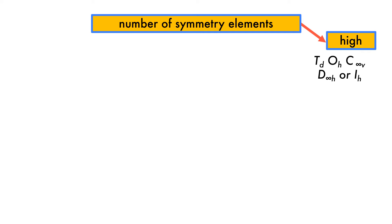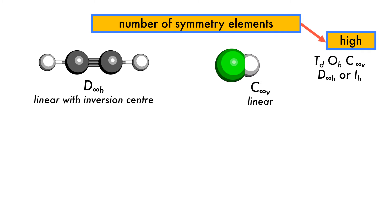On the other side of the first question, we have point groups with high symmetry. D infinity H is represented by ethyne, which is linear with an inversion center. C infinity V is linear, and a prime example is hydrochloric acid.